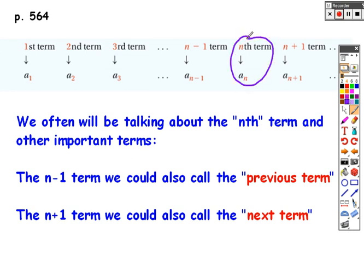With regards to the nth term, we also talk about the term before the nth term. That would be a sub n minus 1. And if I want a term that's after a given term a sub n, that would be a sub n plus 1.